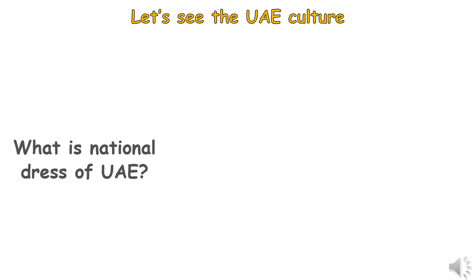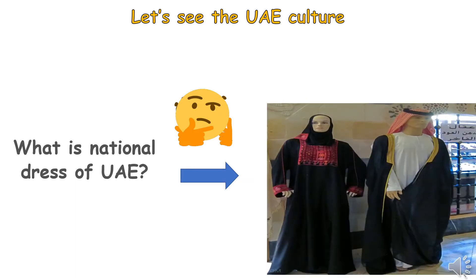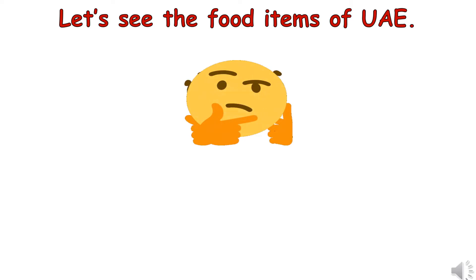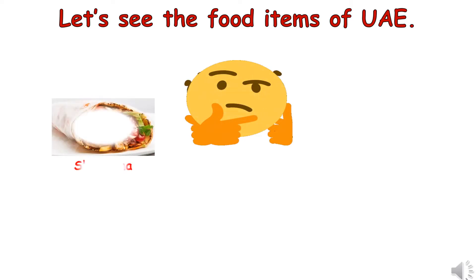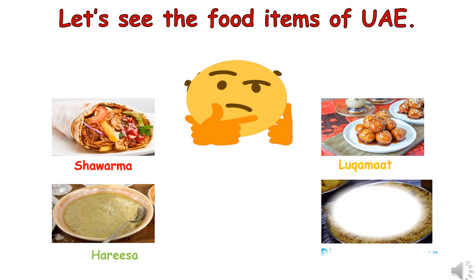Let's see the UAE culture. What is the national dress of the country? Abaya and kandhura. Let's see the food items of UAE: Shawarma, Lukhaimat, Harissa — you can say rice with chicken or mutton.